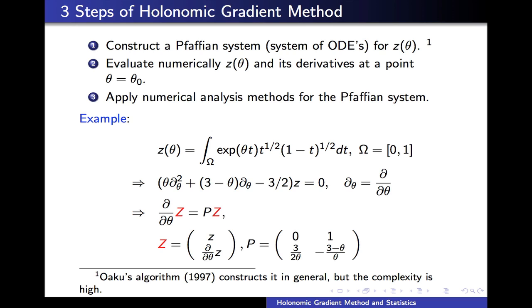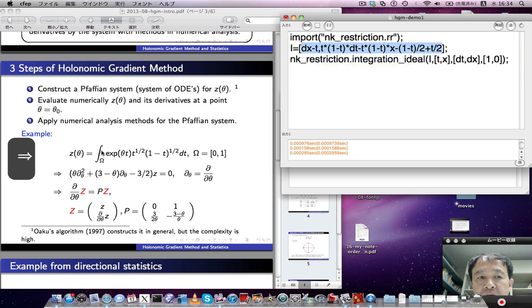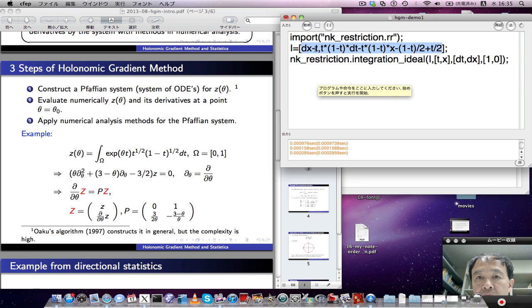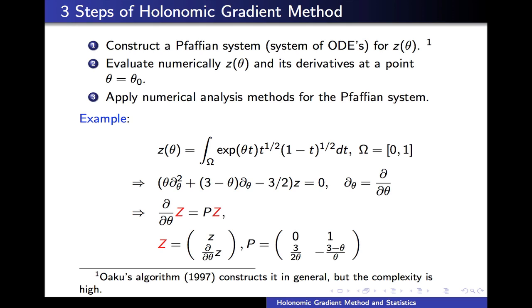Let us consider the first step with an example. We consider this normalizing constant. Here is a demonstration of Oaku's algorithm. This part is the system of differential equations satisfied by this kernel function, and theta stands for the X in this expression. Let's run this. Then we get this ordinary differential equation. This is a general method, but unfortunately the complexity is high in general, and so it is nice to study Pfaffian systems for each of these problems in statistics.